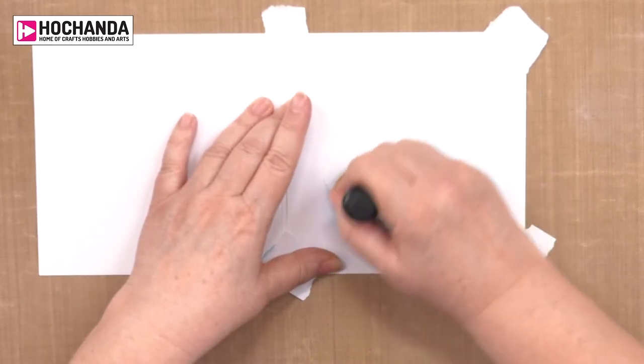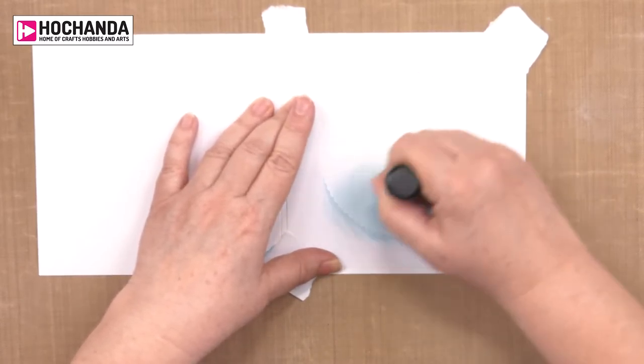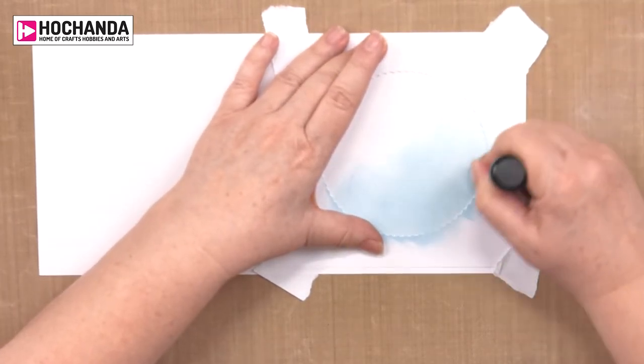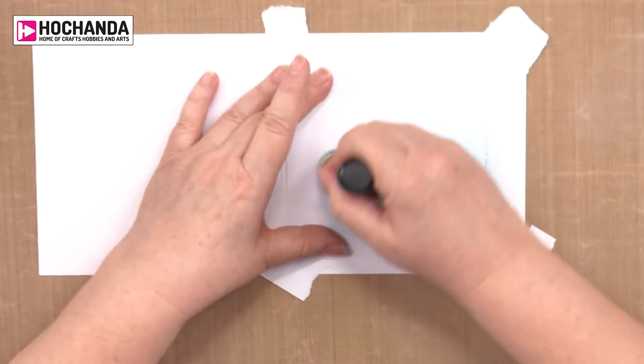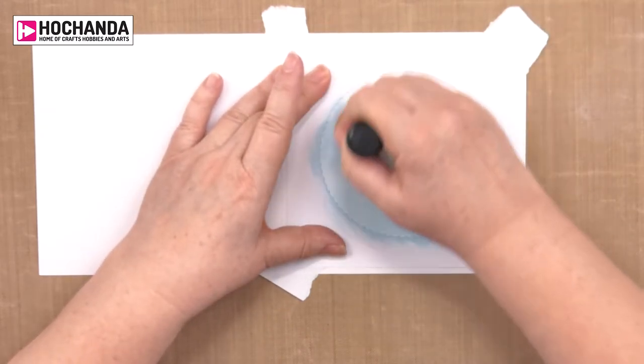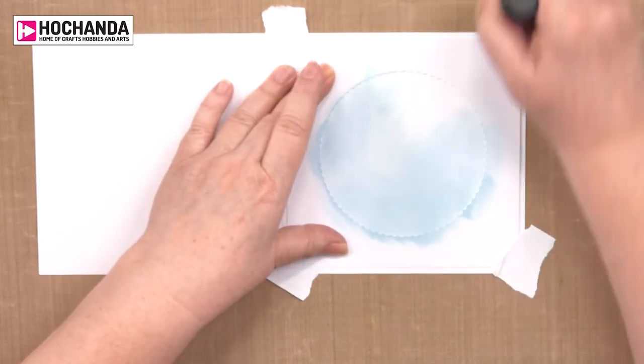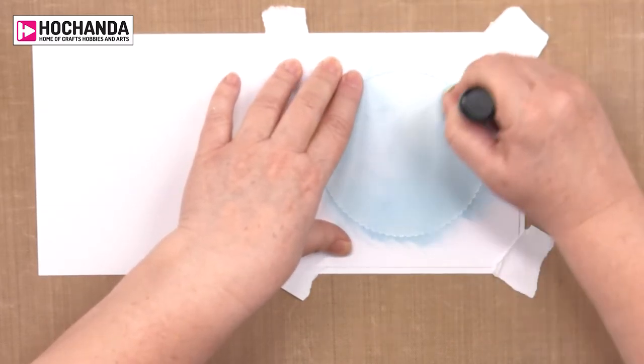You can see I'm just working round and round. We've got a nice blue background for our little fishes. Looks like I'm going to get this done in one. All the way round.